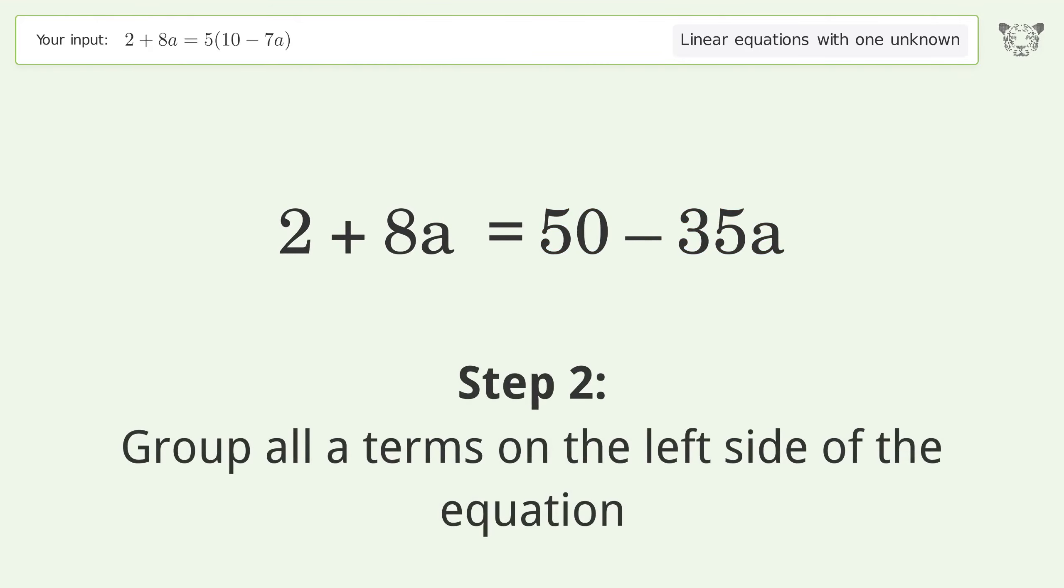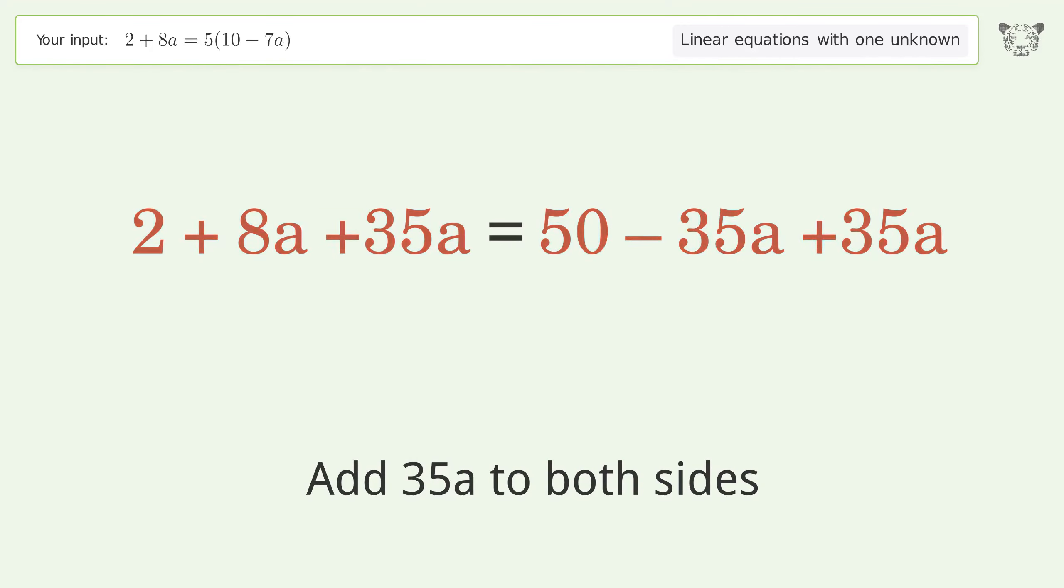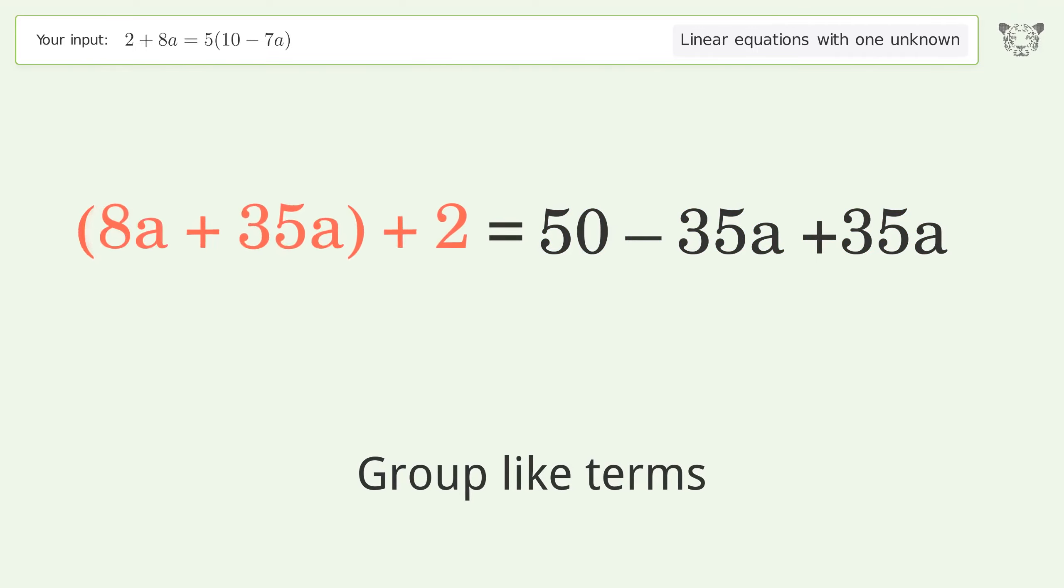Group all a terms on the left side of the equation. Add 35a to both sides. Group like terms. Simplify the arithmetic.